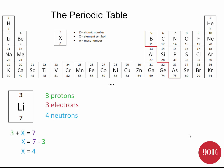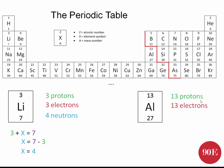Let's look at one more example — aluminium. Aluminium has an atomic number of 13, which means 13 protons and 13 electrons. To work out the neutrons, we look at the mass number, which is 27. So 13 protons plus x neutrons equals 27. Therefore x must equal 27 minus 13, which equals 14 neutrons.